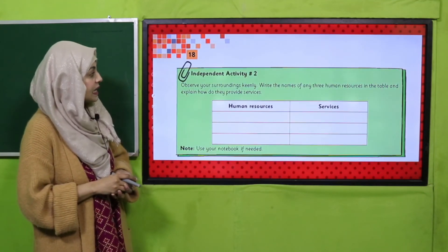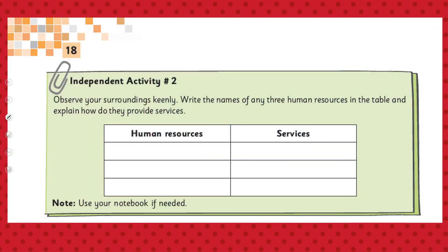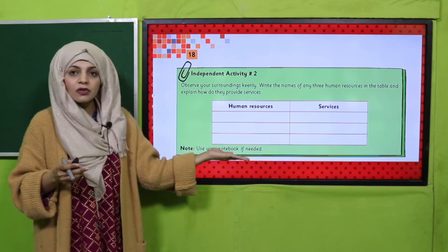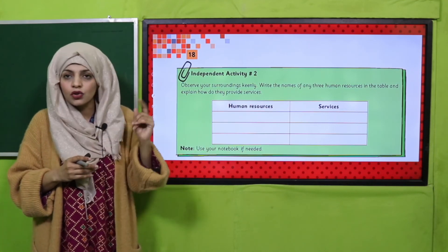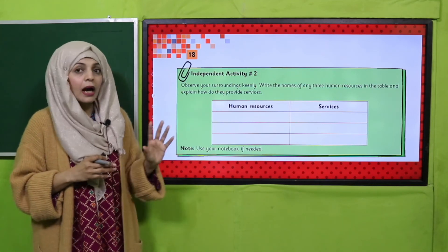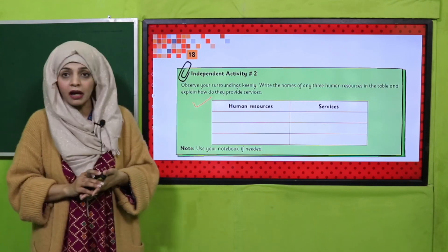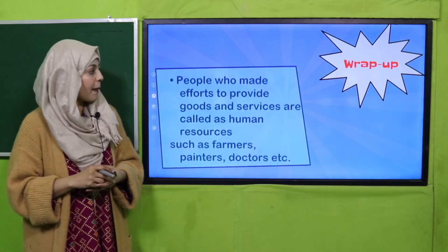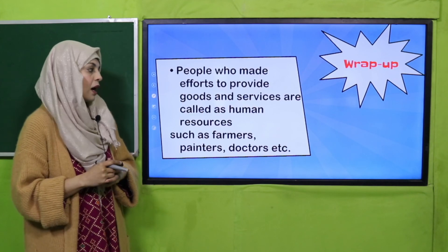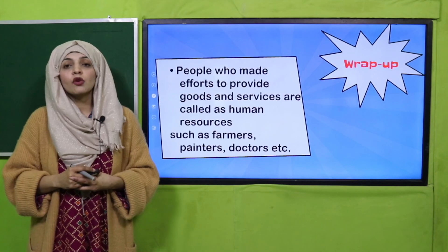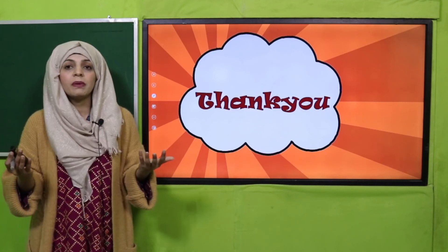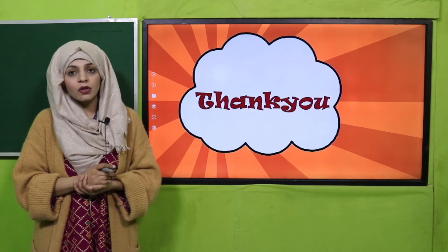Now is the time for homework. Note down your homework from page number 18, Independent Activity Number Two: Observe your surroundings carefully, write the names of three human resources in the table, and explain how they provide services. You already did something similar on the worksheet. List three human resources and discuss their services — like your teacher, a doctor, a policeman. If the table in the book is not enough, draw a similar table in your notebook. Wrap-up: People who make efforts to provide goods and services are called human resources, such as farmers, painters, doctors, etc. Keep everybody around you safe, have a good day. Thank you so much. Allah Hafiz.